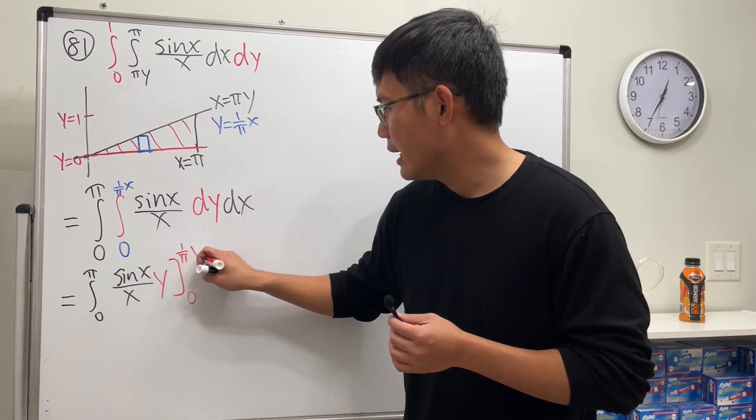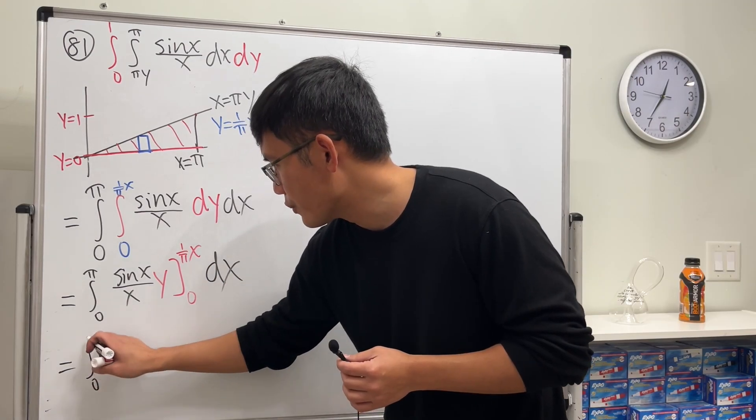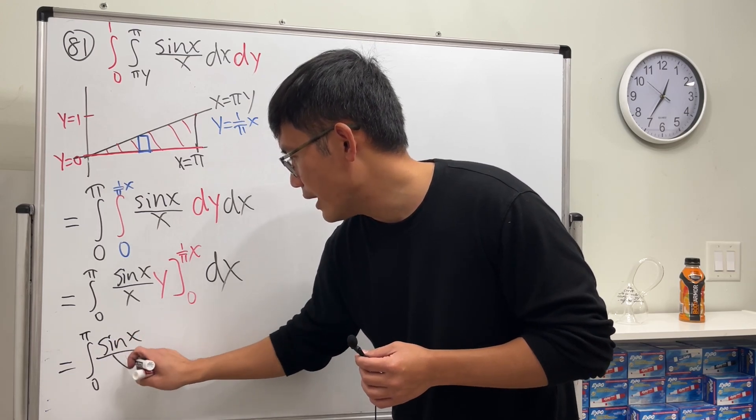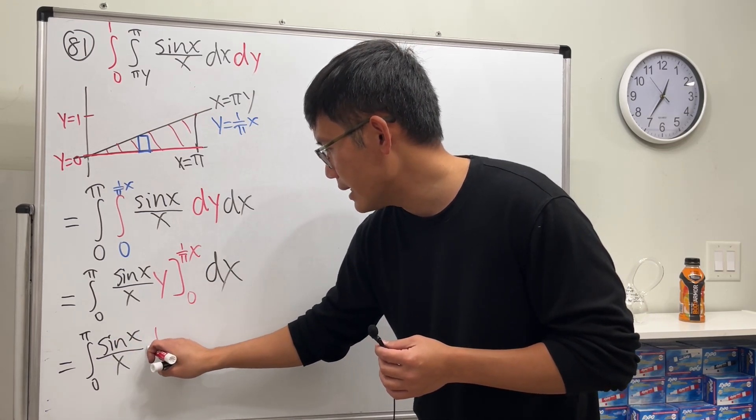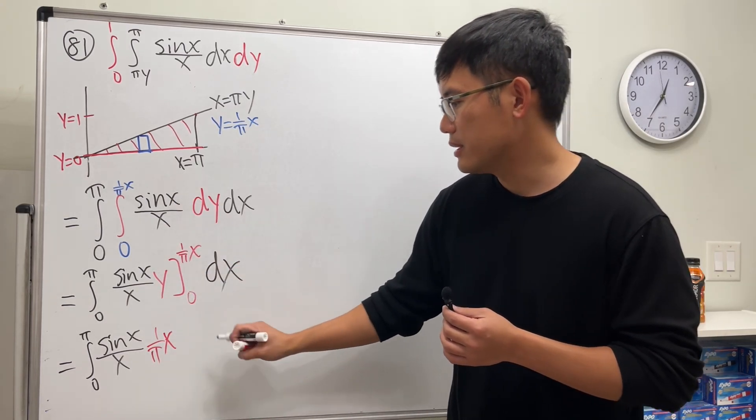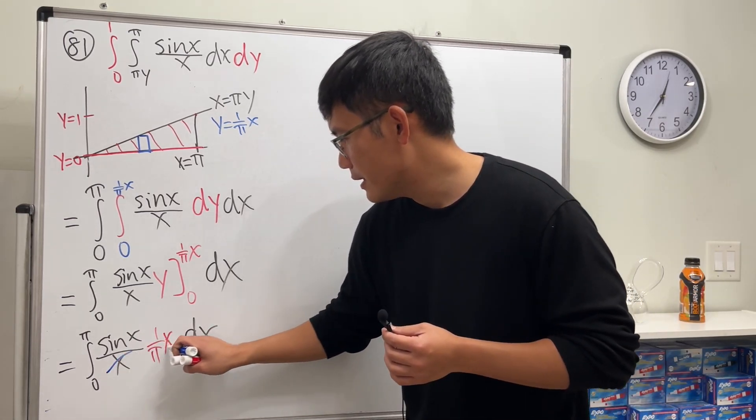This is integral going from zero to π, sin x over x, and then we have x over π. Yeah, and then plugging zero will just get zero, so this is okay, so that dx. Guess what, this and that cancel.